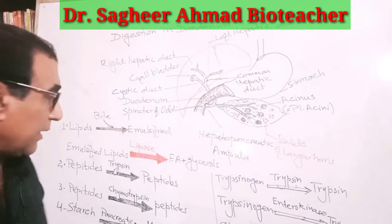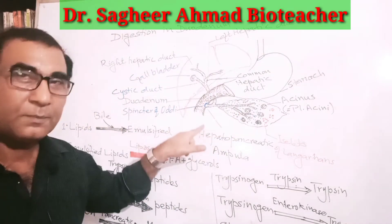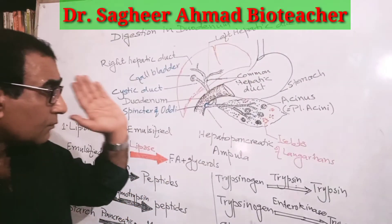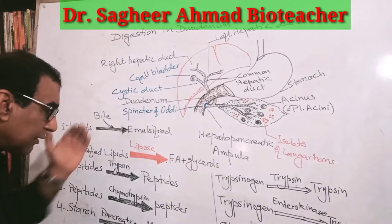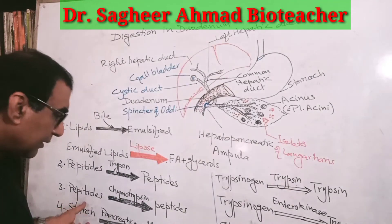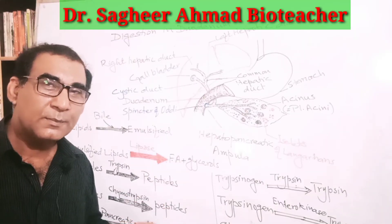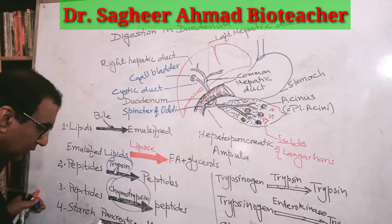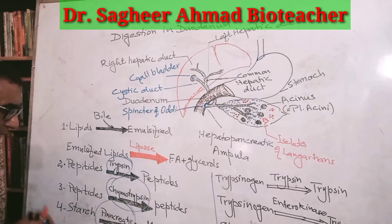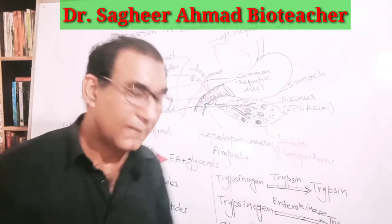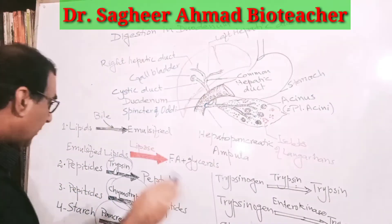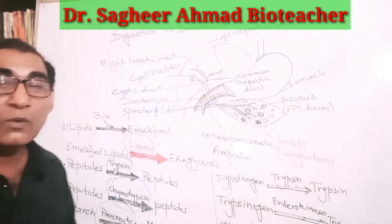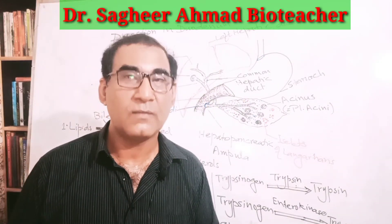There is another enzyme in pancreatic juice called chymotrypsin, which also breaks peptides into smaller peptides. So the three major enzymes present in pancreatic juice are trypsin, chymotrypsin, and pancreatic amylase — and the fourth is lipase. These four enzymes are involved in the digestion of carbohydrates, lipids, and proteins.